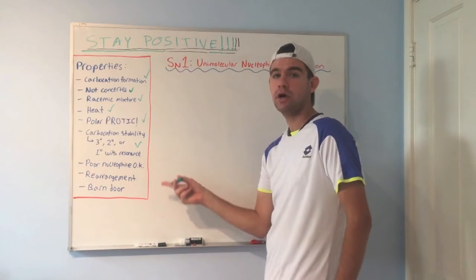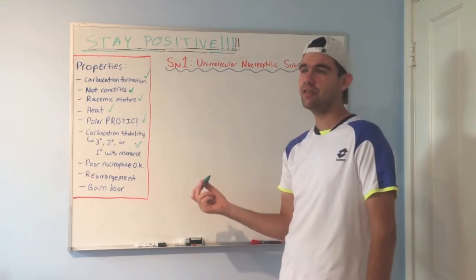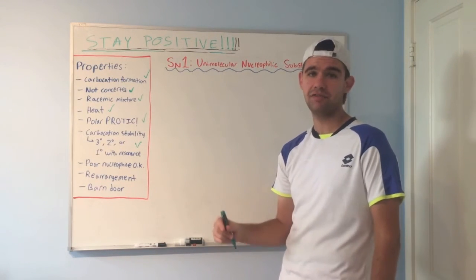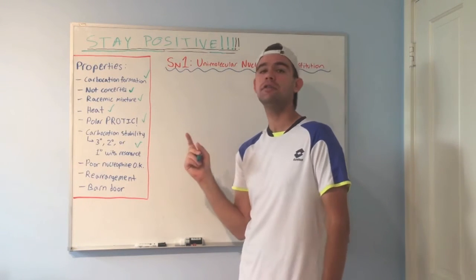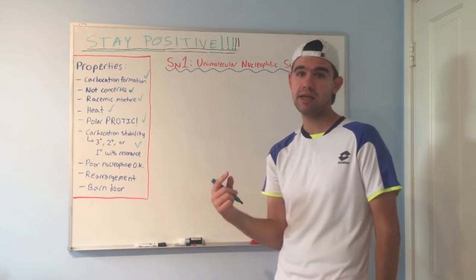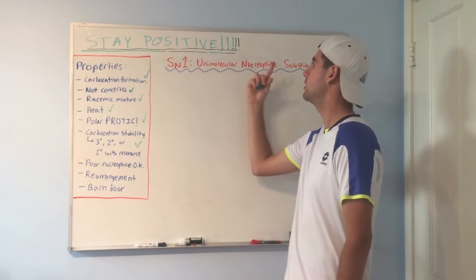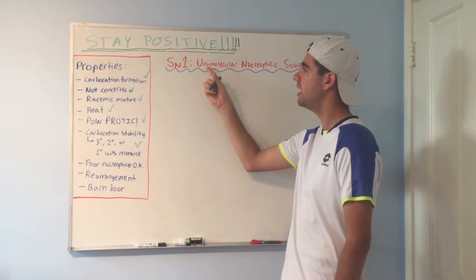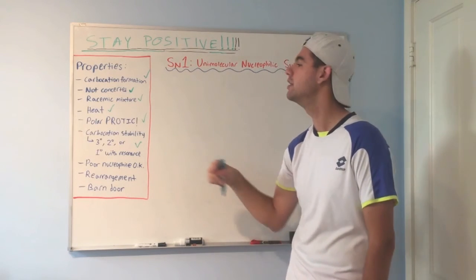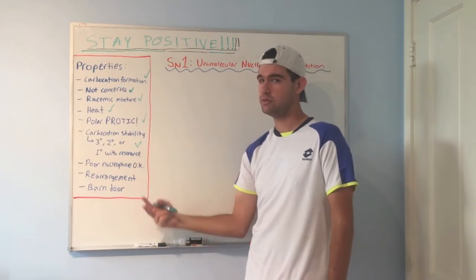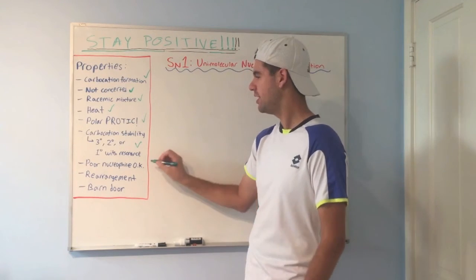Poor nucleophiles are okay. So anytime you see a bad nucleophile that you brush off completely for SN2, consider whether it can do SN1 because for SN1, the nucleophile plays no role in the rate. It's a unimolecular nucleophilic substitution because the rate determining step only depends on one thing, the electrophile, not the nucleophile. So poor nucleophiles are fine. A-okay.